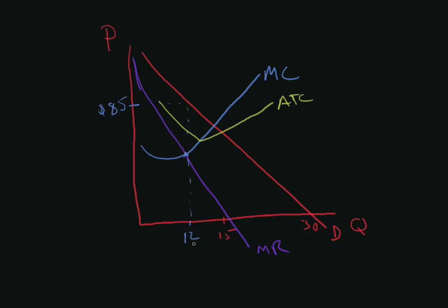So now you find out the total cost of making 12 units. 12 times the average total cost, come over here. In this case, it looks like something like $65.